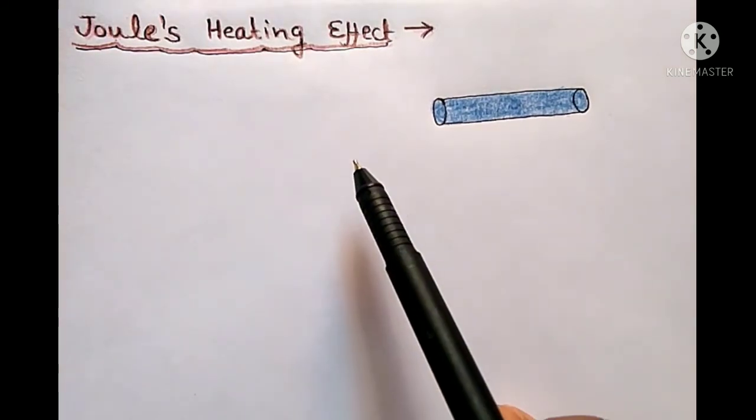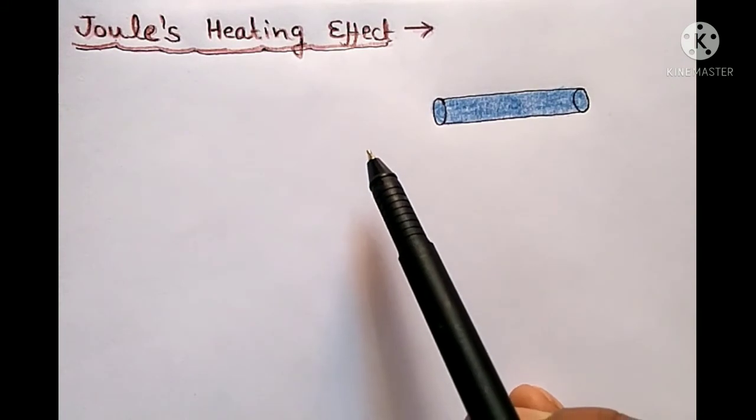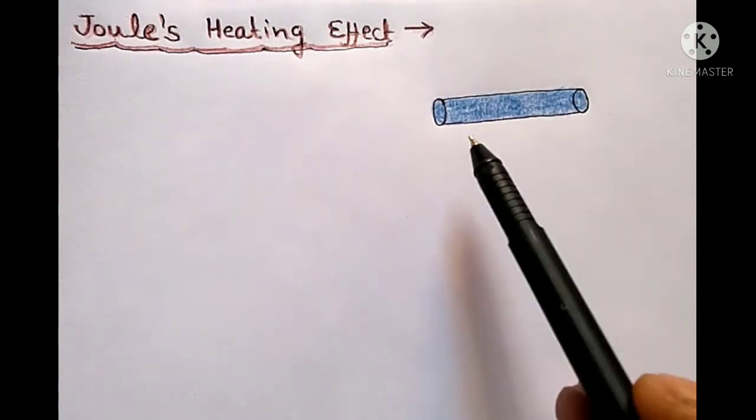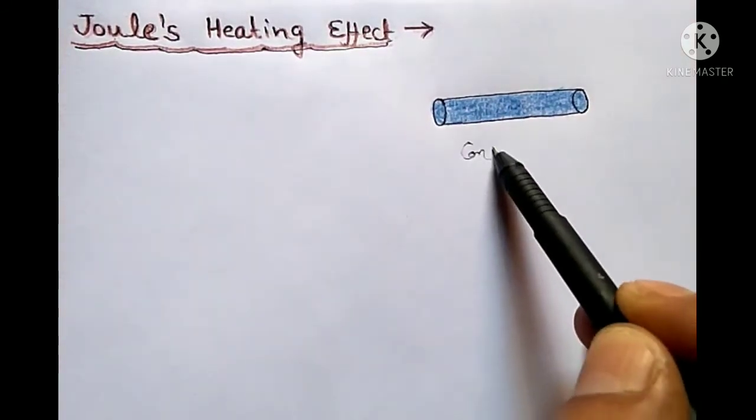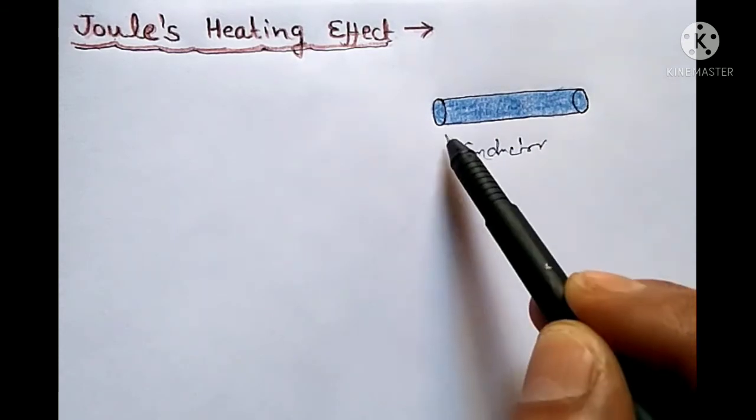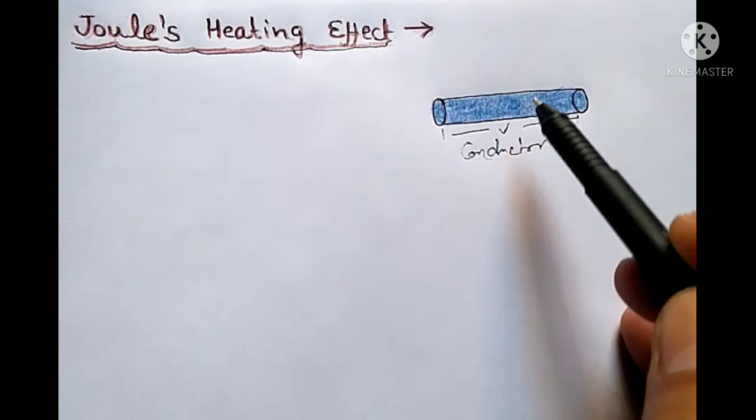For this, Joule gave a law that is known as the Joule law of heating effect of electric current. Suppose this is a conductor and let V be the potential difference across the ends of the conductor.